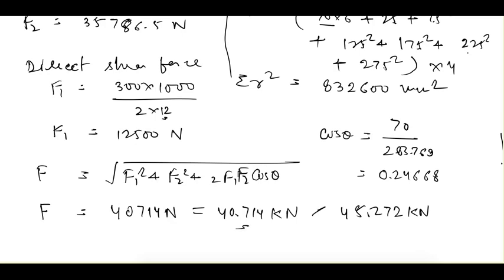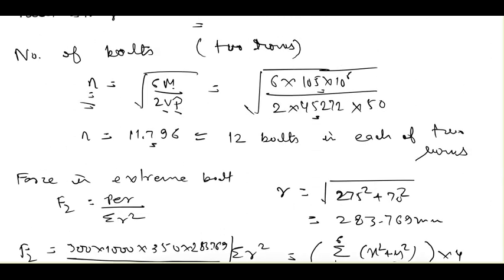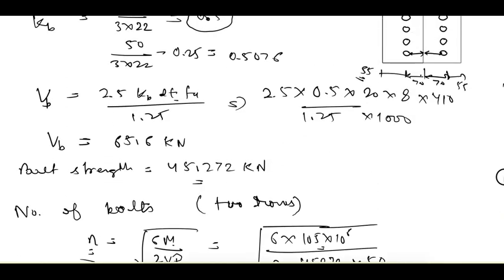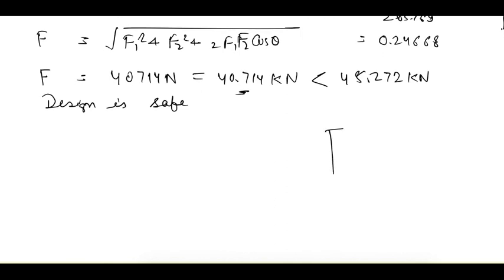Bolt strength = 45.272 kN, which is greater than the force in the extreme bolt of 40.714 kN, so the design is safe. This question demonstrated how to find the number of bolts and do a basic design check. For eccentric connections perpendicular to the plane of loading, no questions are covered here, so just read the theory from an objective point of view.